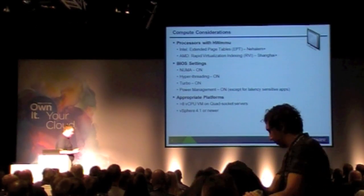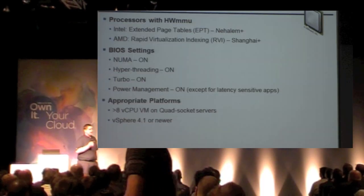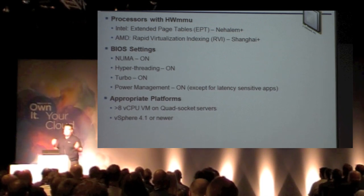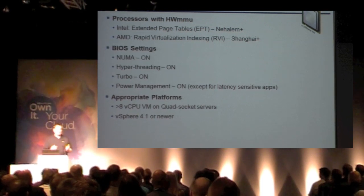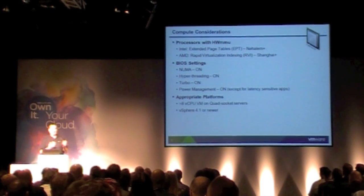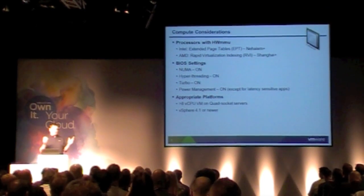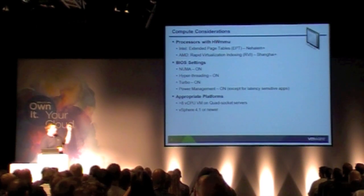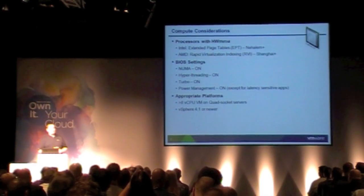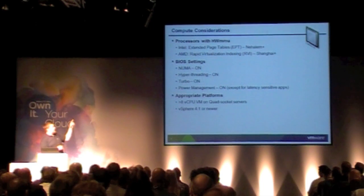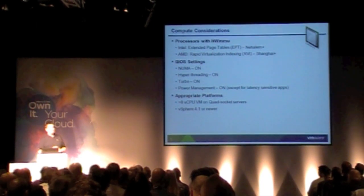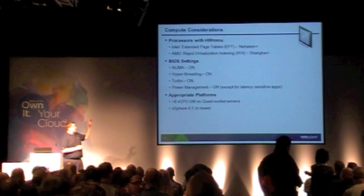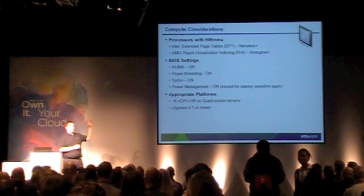What's important in the compute resource dimension — and I see this missed quite frequently — is that the latest hardware platforms perform best. It makes a lot of sense, but there's a very important feature that's changed recently: in the Intel space it's called EPT, and in the AMD space it's called RVI.